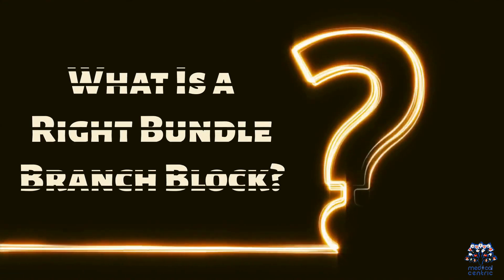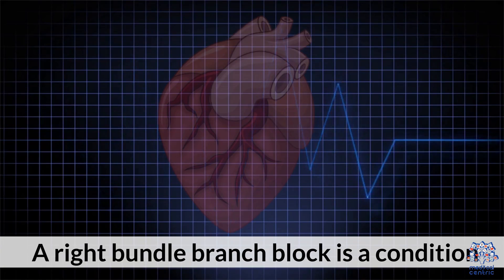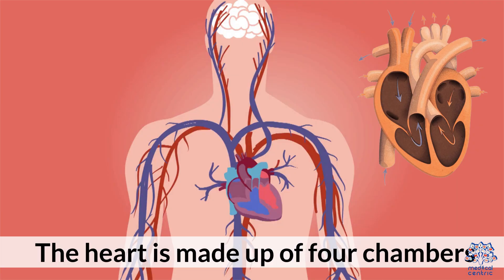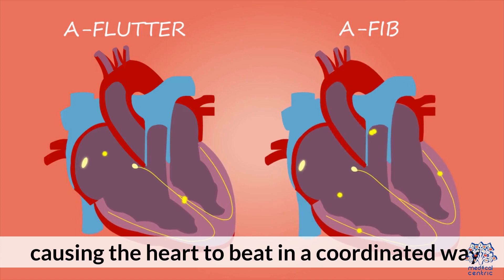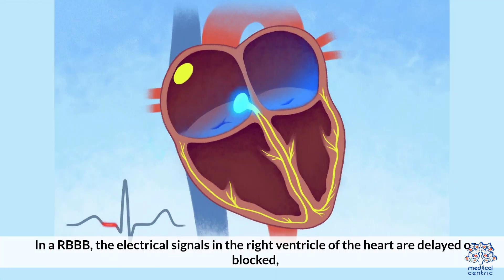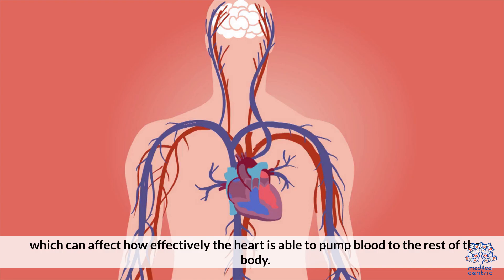A Right Bundle Branch Block is a condition that affects the way electrical signals move through the heart. The heart is made up of four chambers, including the left and right ventricles. The heart's electrical signals travel through the heart's electrical system, causing the heart to beat in a coordinated way. In a RBBB, the electrical signals in the right ventricle are delayed or blocked, causing the heart to beat out of sync, which can affect how effectively the heart is able to pump blood to the rest of the body.